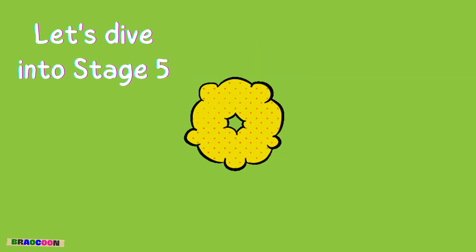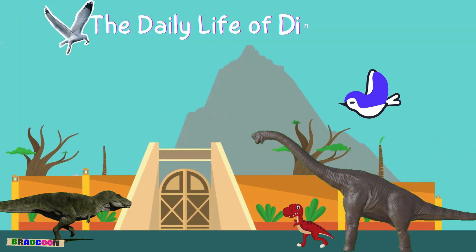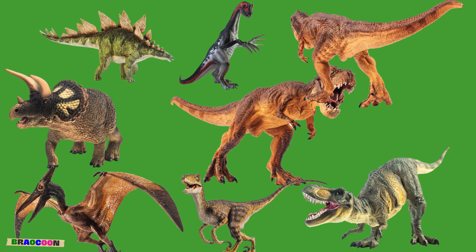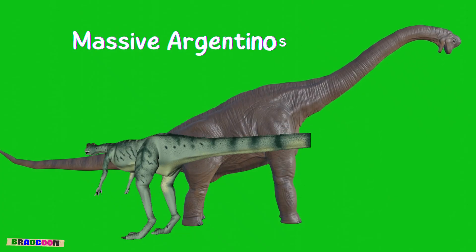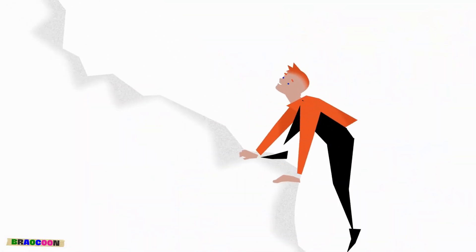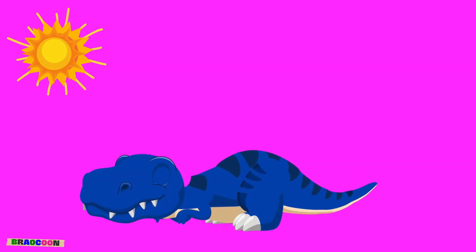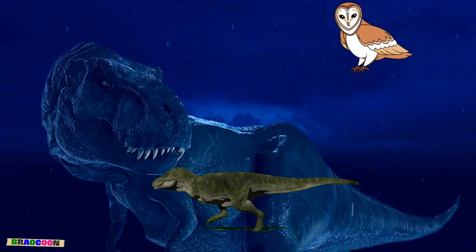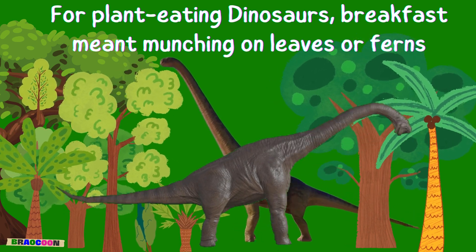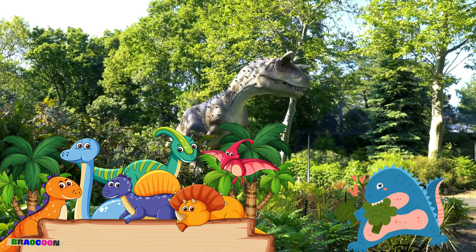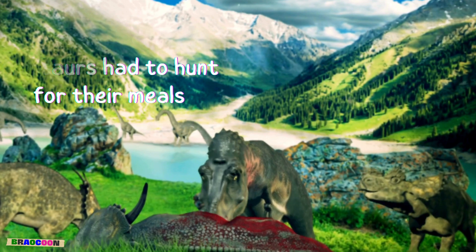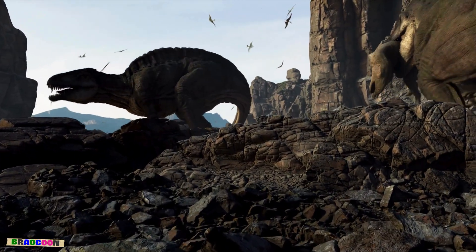Let's dive into Stage 5 where we uncover the daily life of dinosaurs. Dinosaurs came in all shapes and sizes, from the tiny Microraptor to the massive Argentinosaurus. Dinosaurs had pretty busy days, just like us. Some dinosaurs woke up early to catch the morning sun, while others were night owls, prowling around after dark. For plant-eating dinosaurs, breakfast meant munching on leaves or ferns — they spent a lot of time looking for yummy plants to eat. On the other hand, meat-eating dinosaurs had to hunt for their meals, chasing after other dinosaurs or smaller critters.